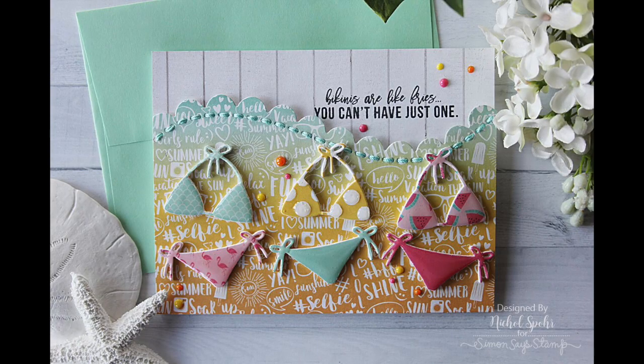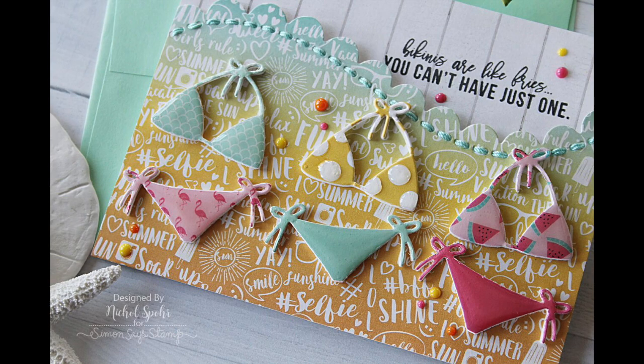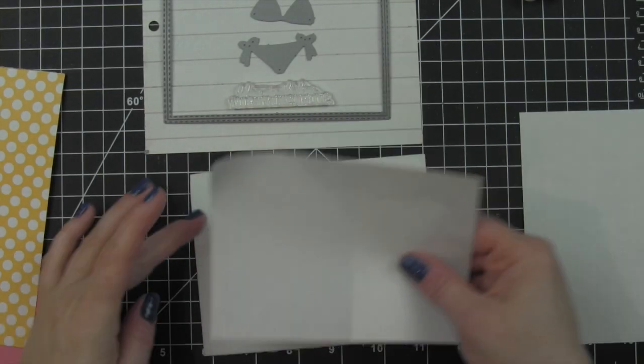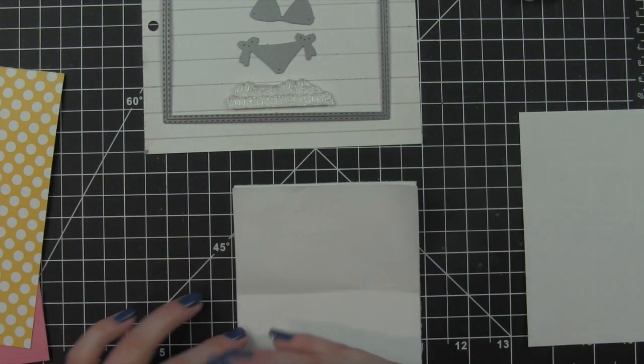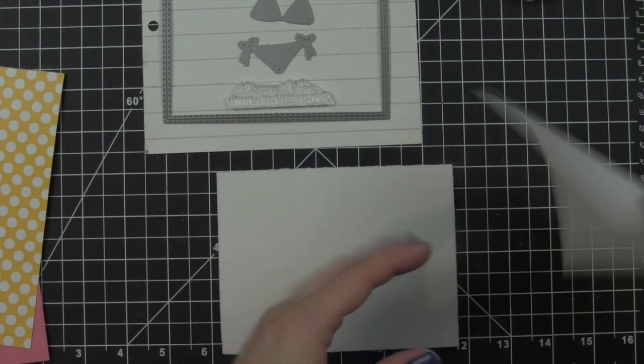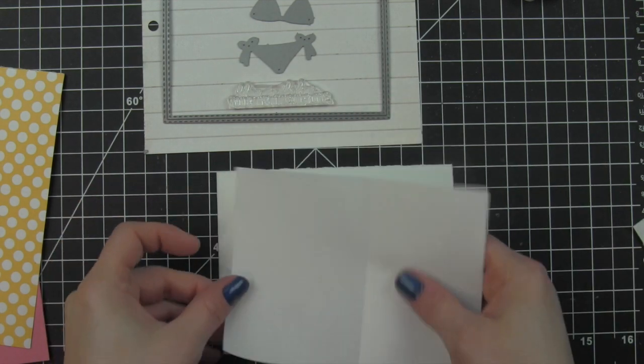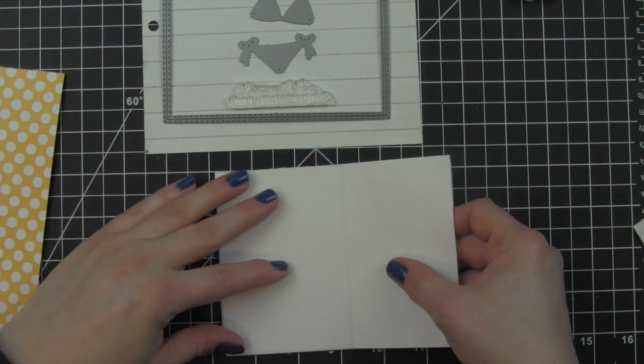Hi there, it's Nicole for Simon Says Stamp. Today I'm sharing a card featuring components from the July 2017 Simon Says Stamp card kit Summer Hello. This card kit includes this adorable exclusive teeny bikini wafer die and the greeting from the stamp set included in the kit called See You Soon.